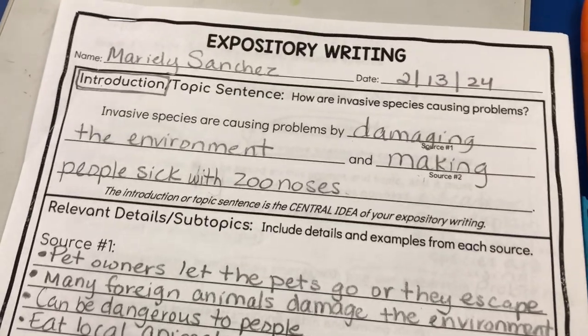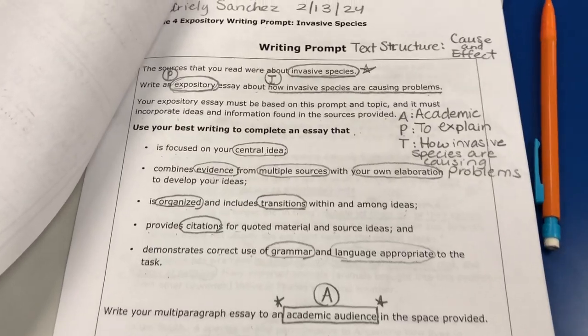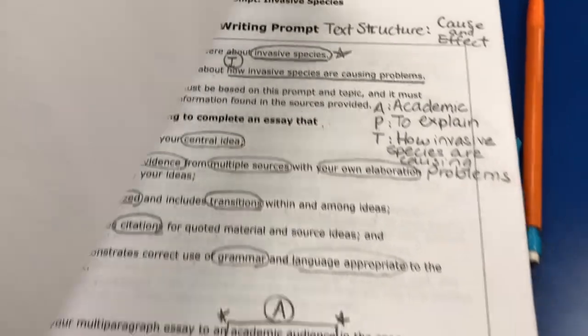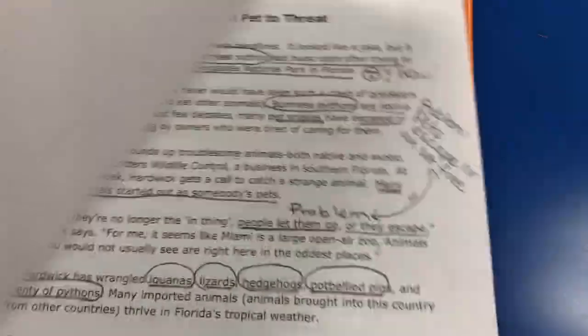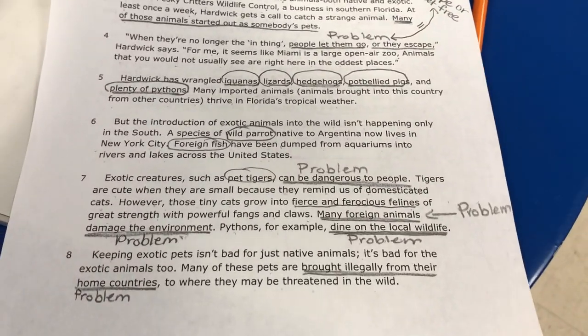With my block two, we dedicated the entire block to writing. We were working on our invasive species expository essay and we're slowly but surely getting it done. Hopefully this week students will type it on Performance Matters, our online assessment platform, so they also get practice typing an essay on a computer. We reviewed the prompt again, talked about the text structure we're going to use, then read source one and went over the problems that invasive species cause.